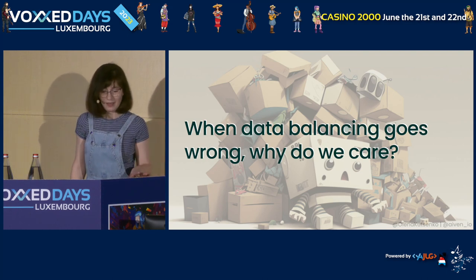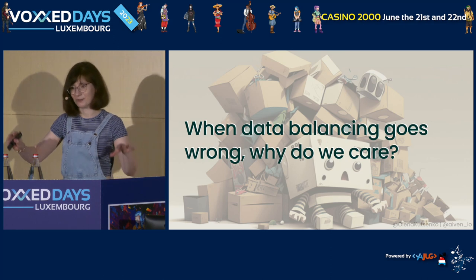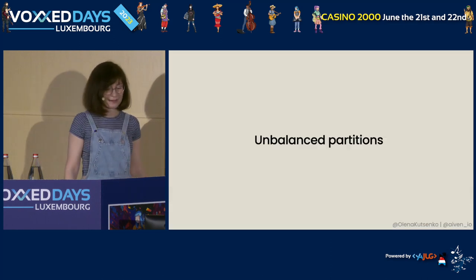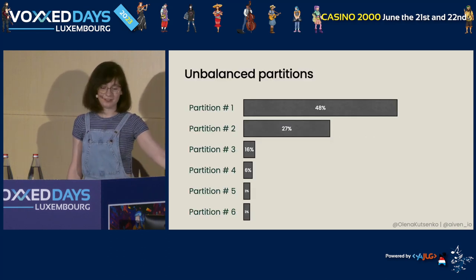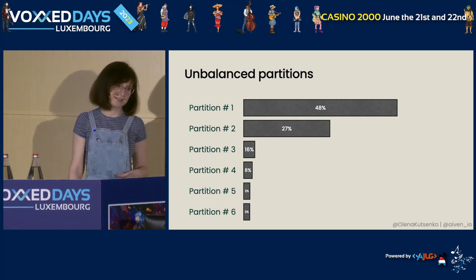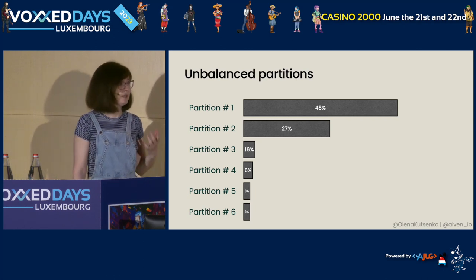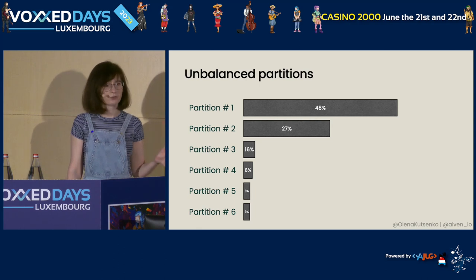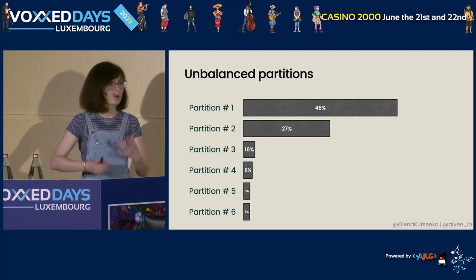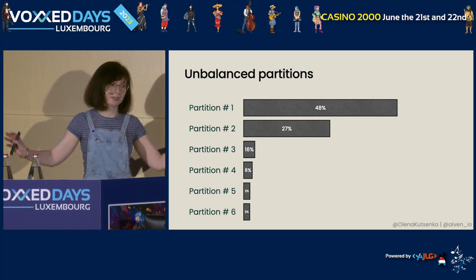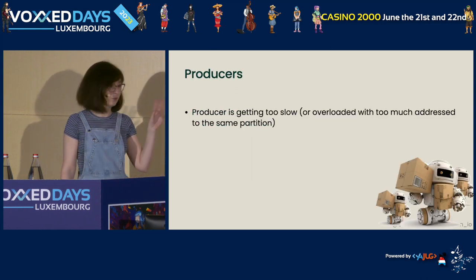Now that we've talked about our options, we need motivation to select a good strategy. Nothing adds motivation like seeing when things really go wild and badly. By far the biggest challenge you can run into is unbalanced partitions. Imagine a topic with six different partitions where data distribution didn't go nicely and evenly. You might think this is quite an extreme scenario, but actually not really — at Aiven we see these cases from time to time, so they are not super rare, unfortunately. And because we also help our customers who come to us with questions about why this happened and how to fix it, trust me, the reasons can be totally wild.